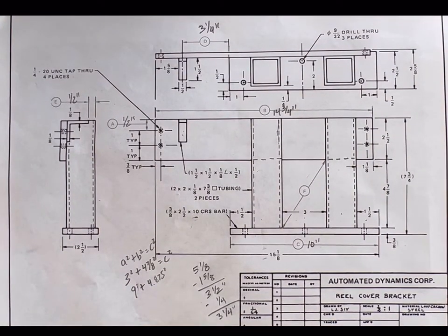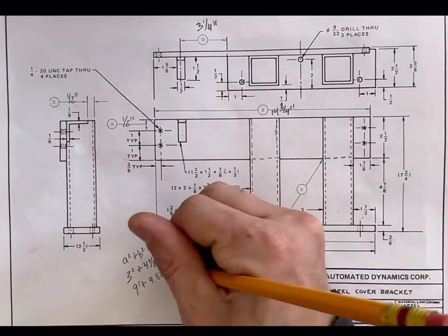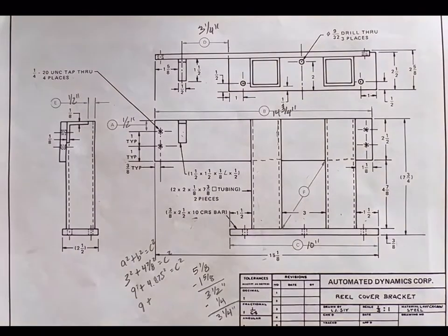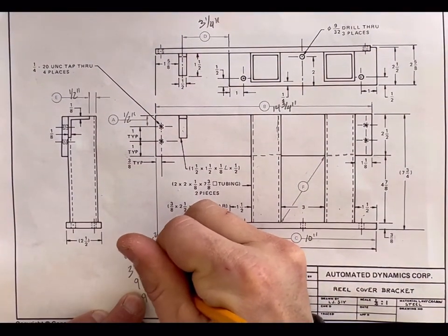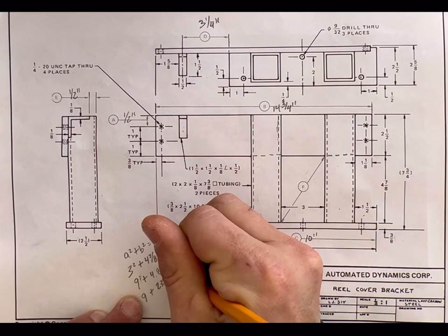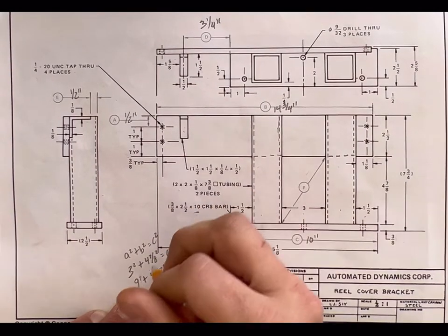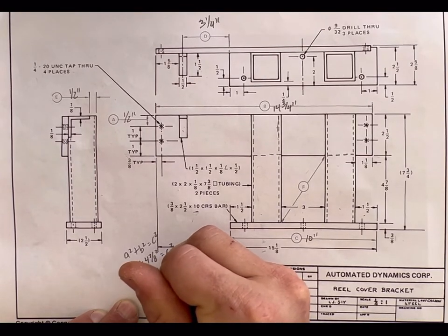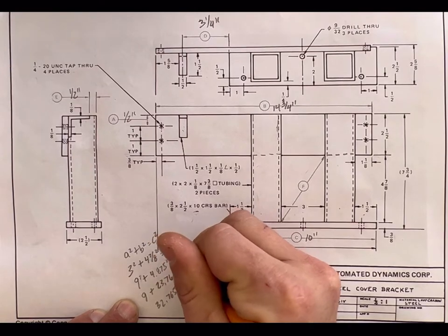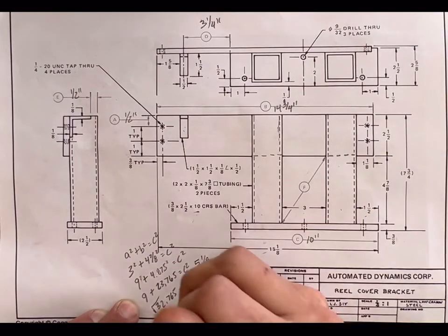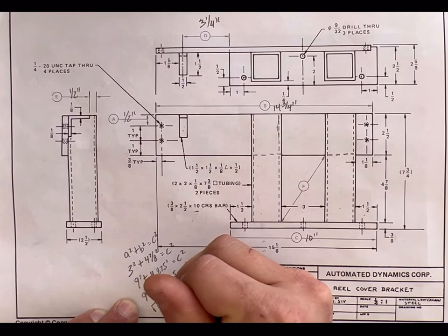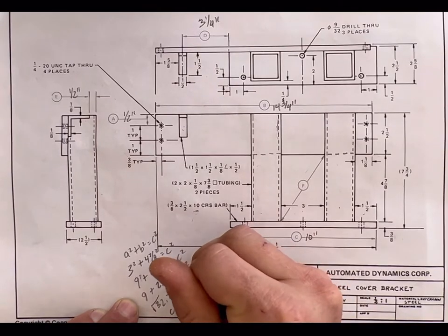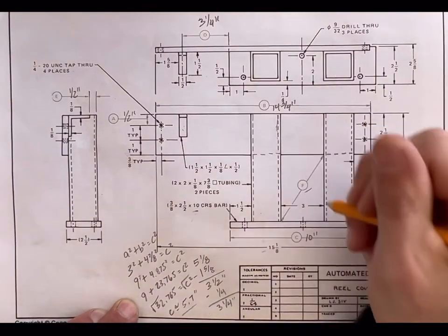And then we would be left with c squared. So we have nine plus 23.7655 equals c squared. If you add these two together, we have 32.765 equals c squared. Go ahead and do the square root of that, and then c would equal approximately 5.7 inches for F here.